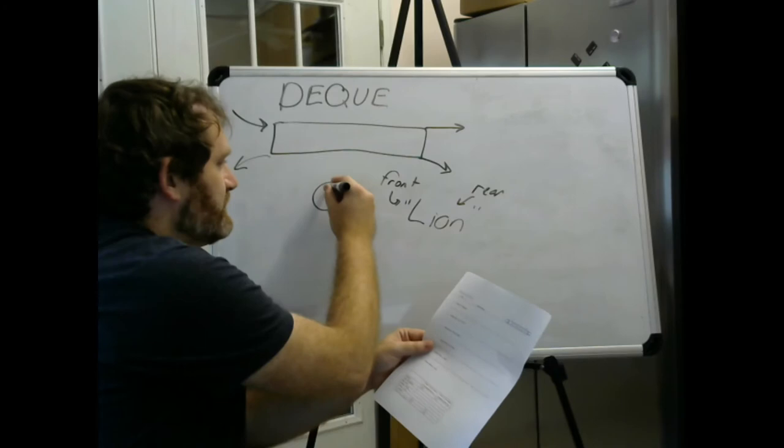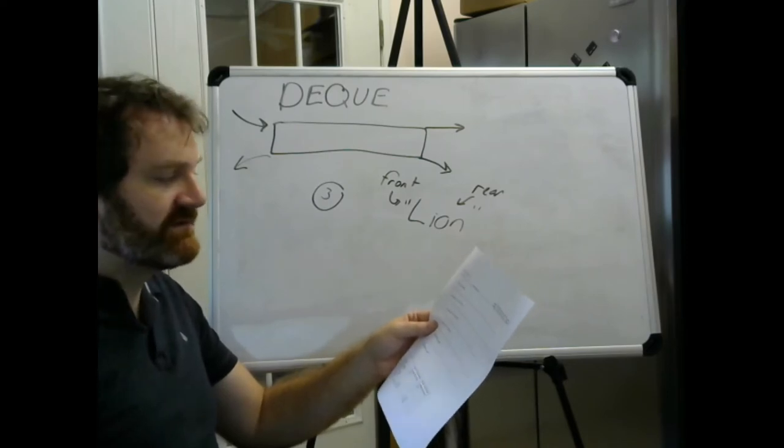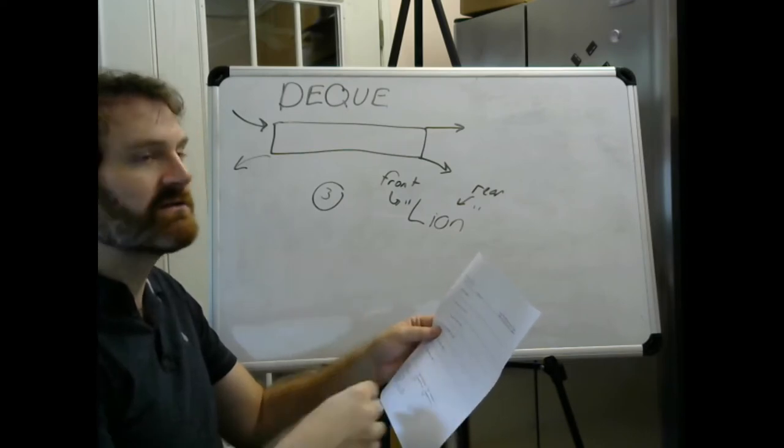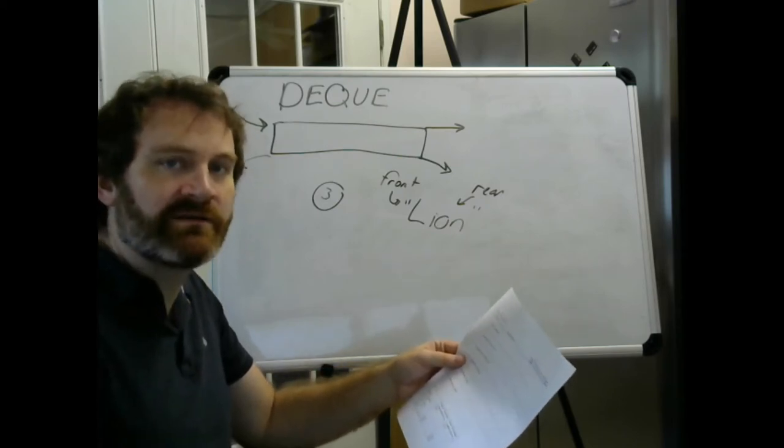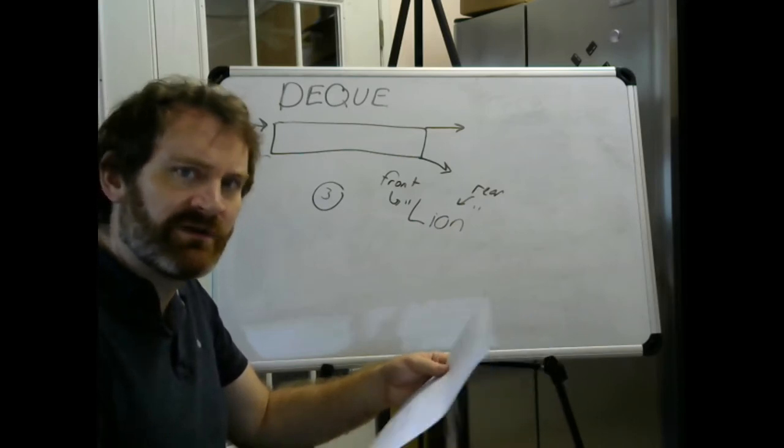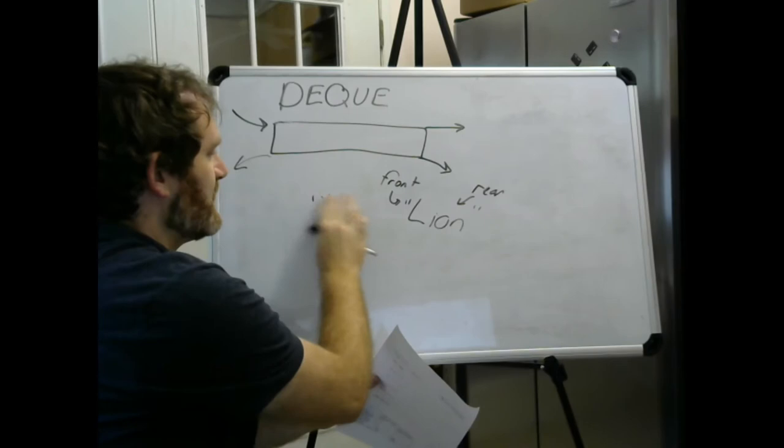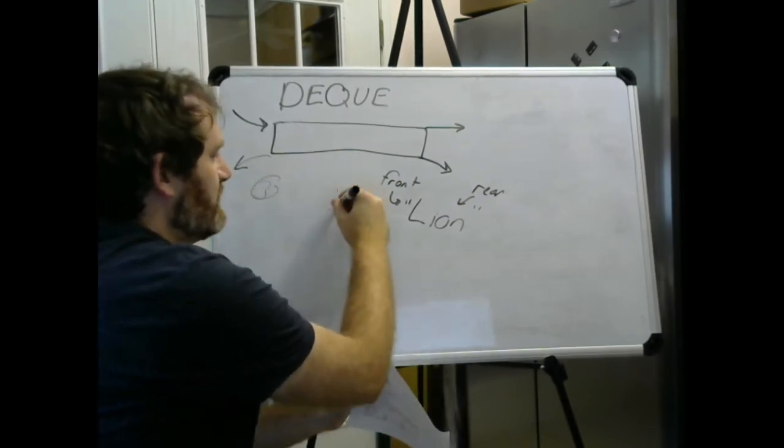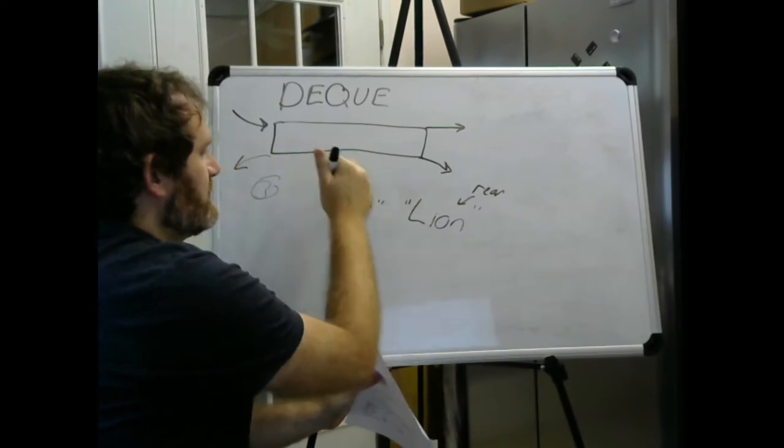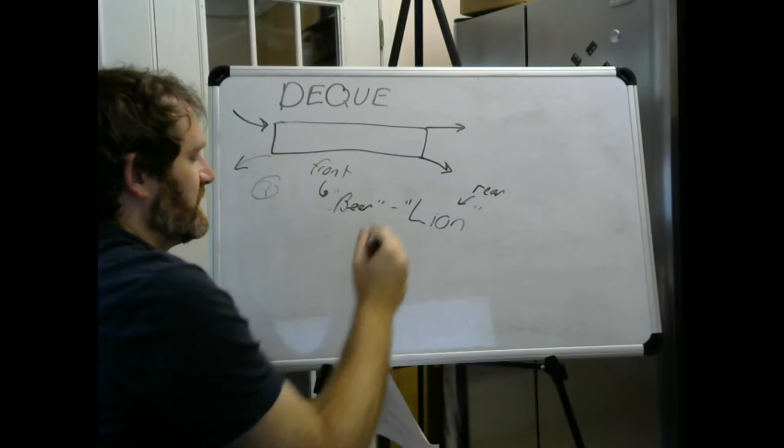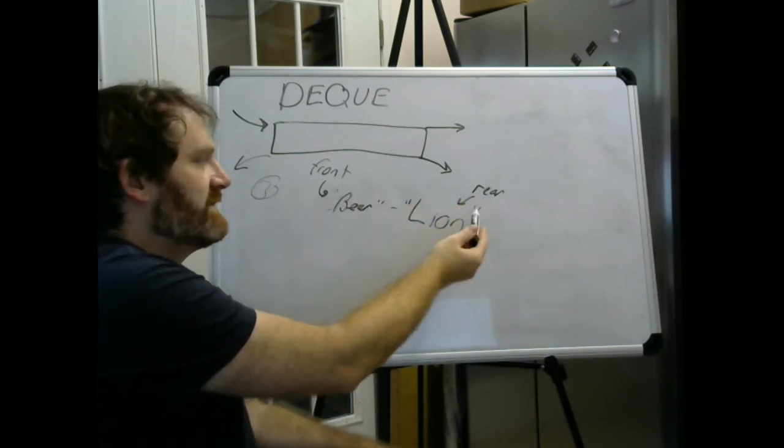Step three, we are going to add to the front, add front, bear. Add rear, add front, remove rear, remove front - those are all methods you will write in your deque class. And you will implement them using a Python array-based list, so it's going to look a lot like your queue implementation but with a couple of extra things. So we are adding to the front the bear. Let me put the bear in front. And we need to move the front here. So we've got the bear, then the lion. The bear is the front, the lion is the rear.